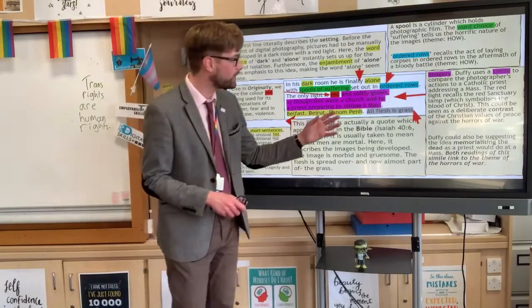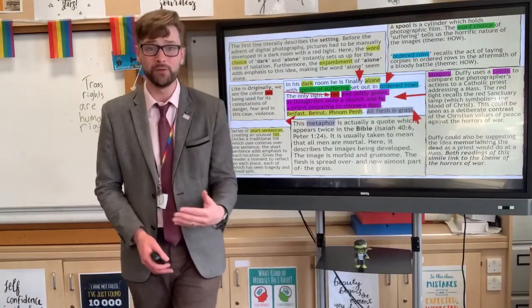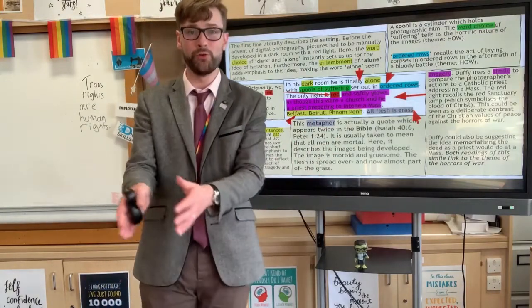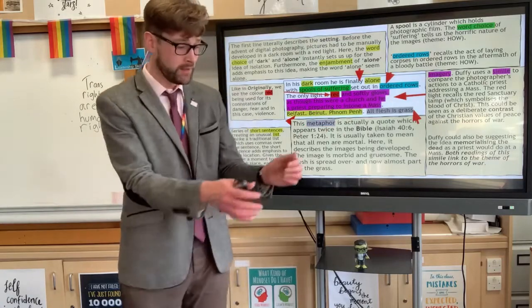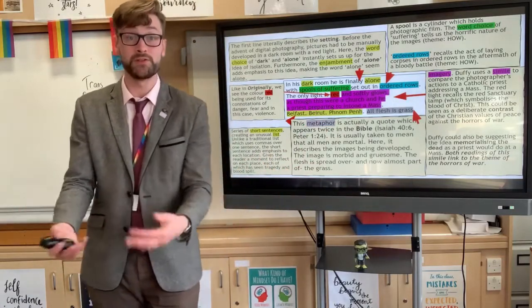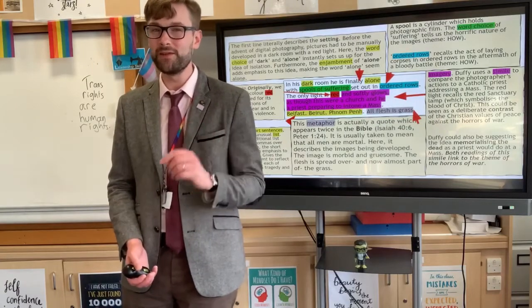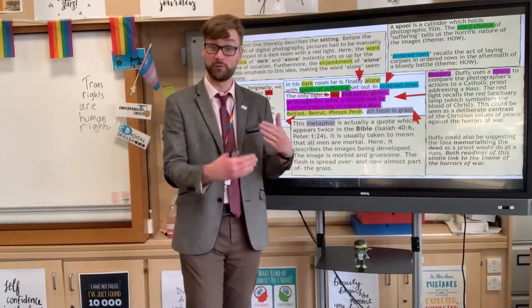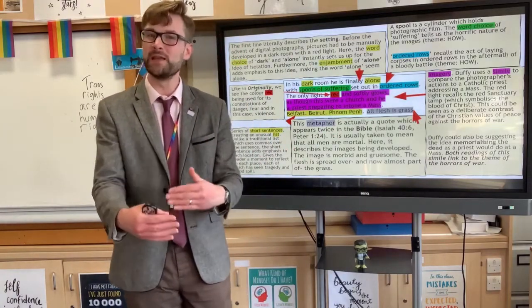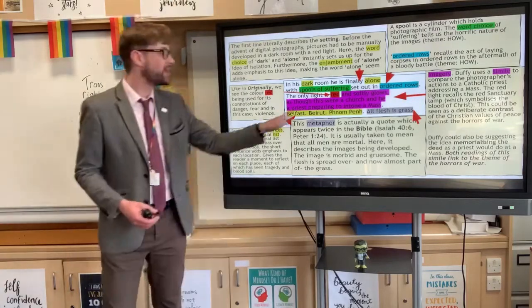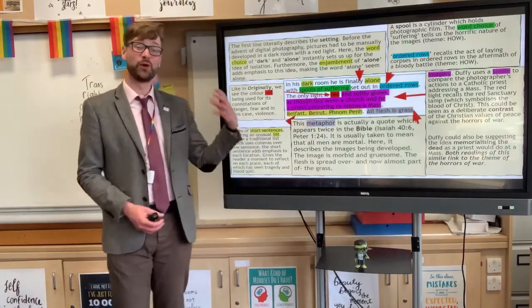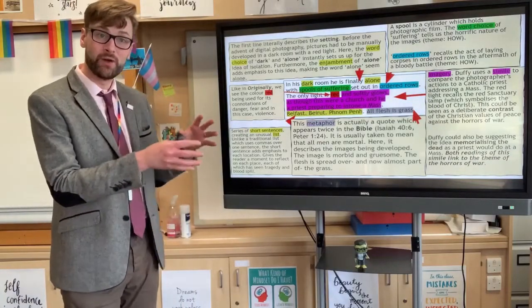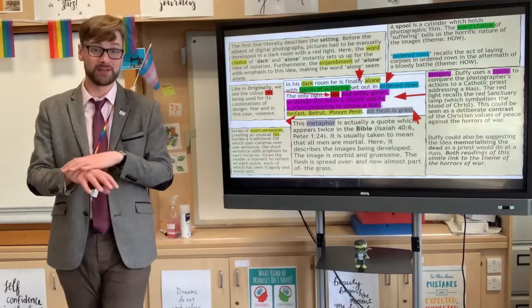First of all, the spools is your photographic film, but that word choice suffering is very powerful. That lets it become very clear to the reader that these pictures contain negative, very traumatic images. They are spools of suffering. These are not happy holiday photographs. And if we got a clue to the nature of these photographs with the use of the words dark and alone, creating quite a negative vibe, then that is very much confirmed with the spools of suffering. But then look at what he does with it. He sets them out in ordered rows.